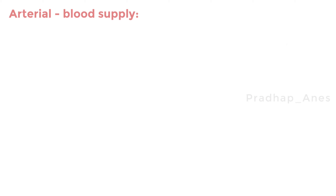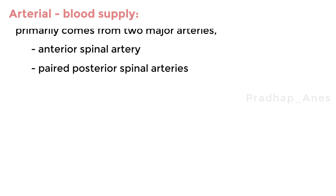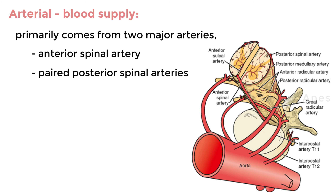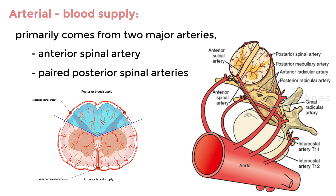Arterial blood supply. The arterial blood supply to the spinal cord primarily comes from two major arteries: the anterior spinal artery and the paired posterior spinal arteries. The anterior spinal artery runs along the front surface of the spinal cord, while the posterior spinal arteries are located on either side towards the back. These arteries give rise to smaller branches that penetrate the spinal cord's outer covering, known as the meninges, and form a dense network of tiny blood vessels that weave through the spinal cord's gray and white matter.